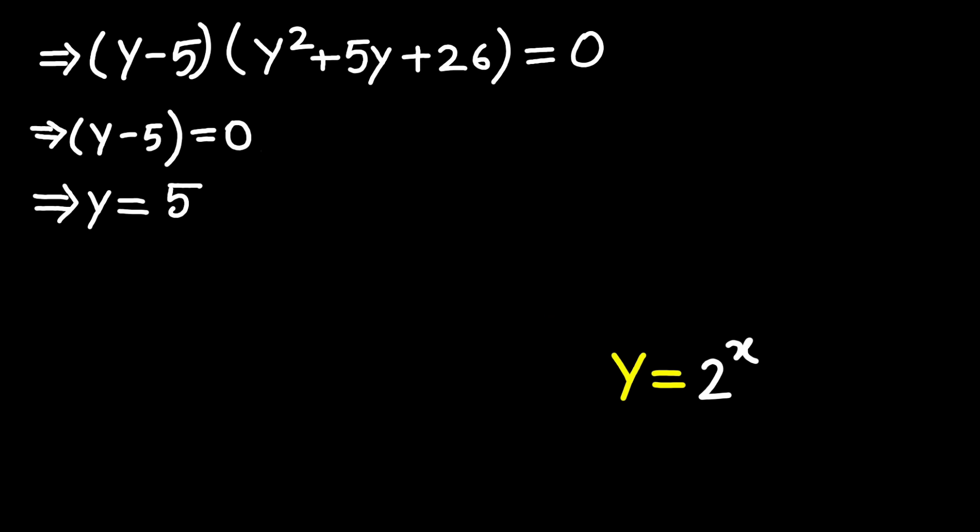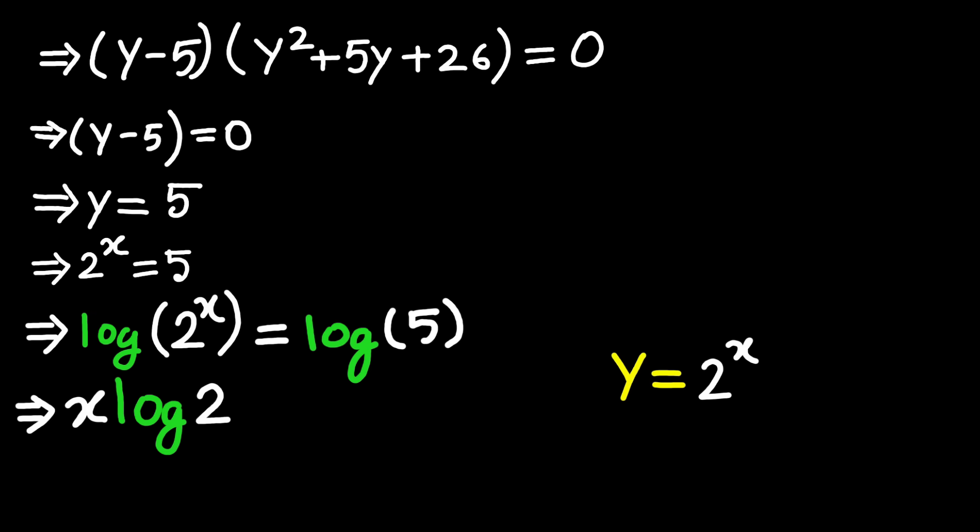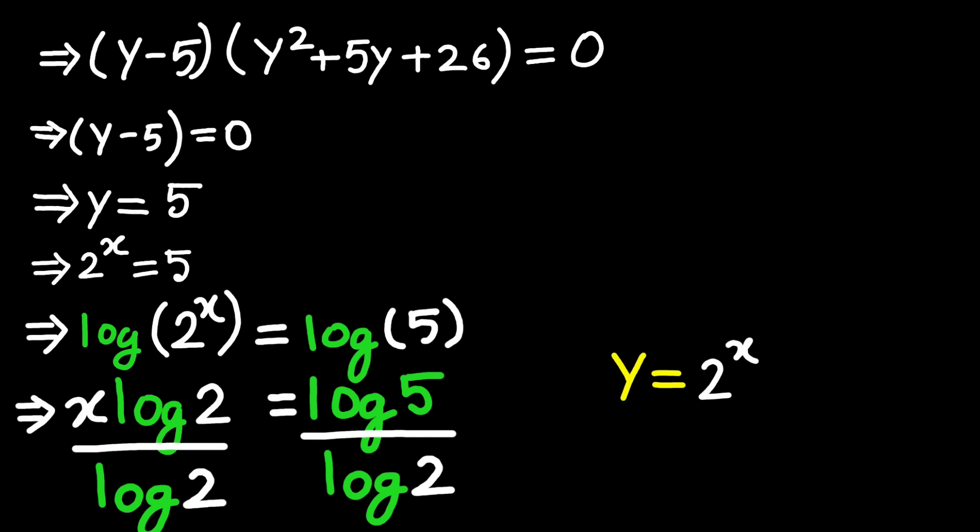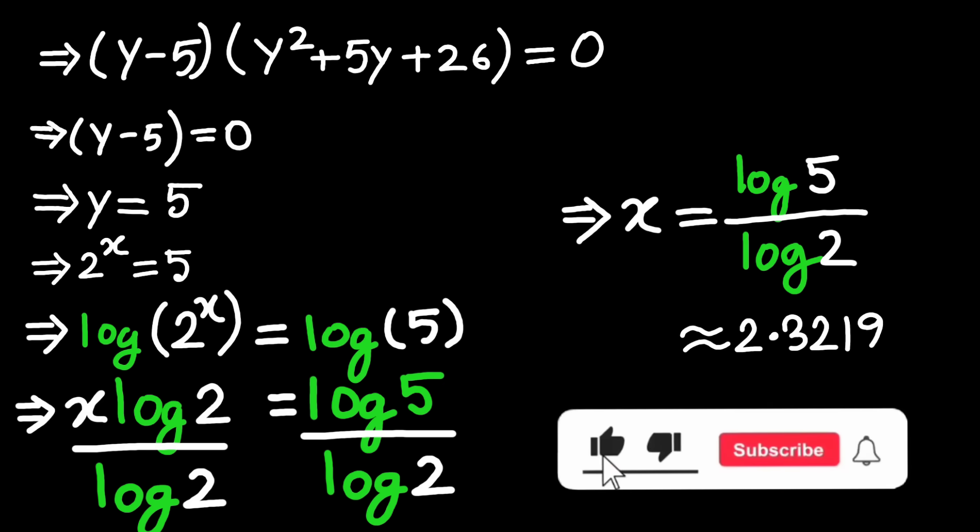Now remember earlier, we set y equal to 2 raised to the power x. So since y equals 5, we have 2 raised to the power x equals 5. Here's what happens next. We take the logarithm of both sides, giving logarithm of 2 raised to the power x equals logarithm of 5. By the logarithm power rule, that becomes x multiplied by logarithm of 2 equals logarithm of 5. Finally, divide through by logarithm of 2, and we get x equals logarithm of 5 divided by logarithm of 2. If we punch that into the calculator, we get approximately 2.3219. And that is our final answer.